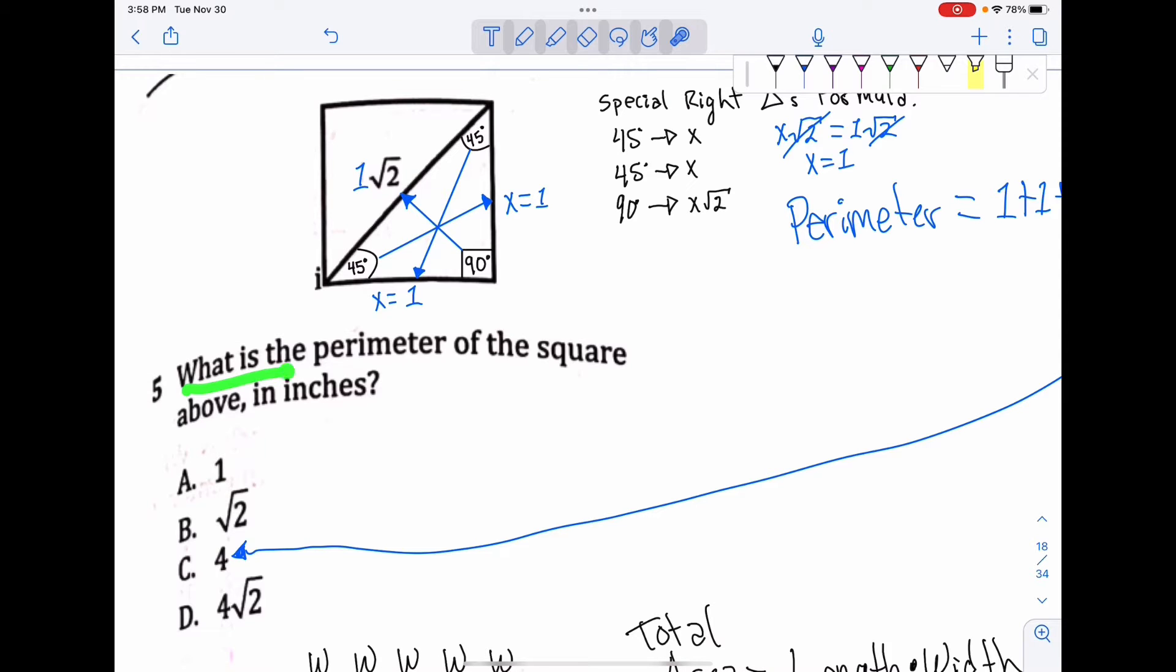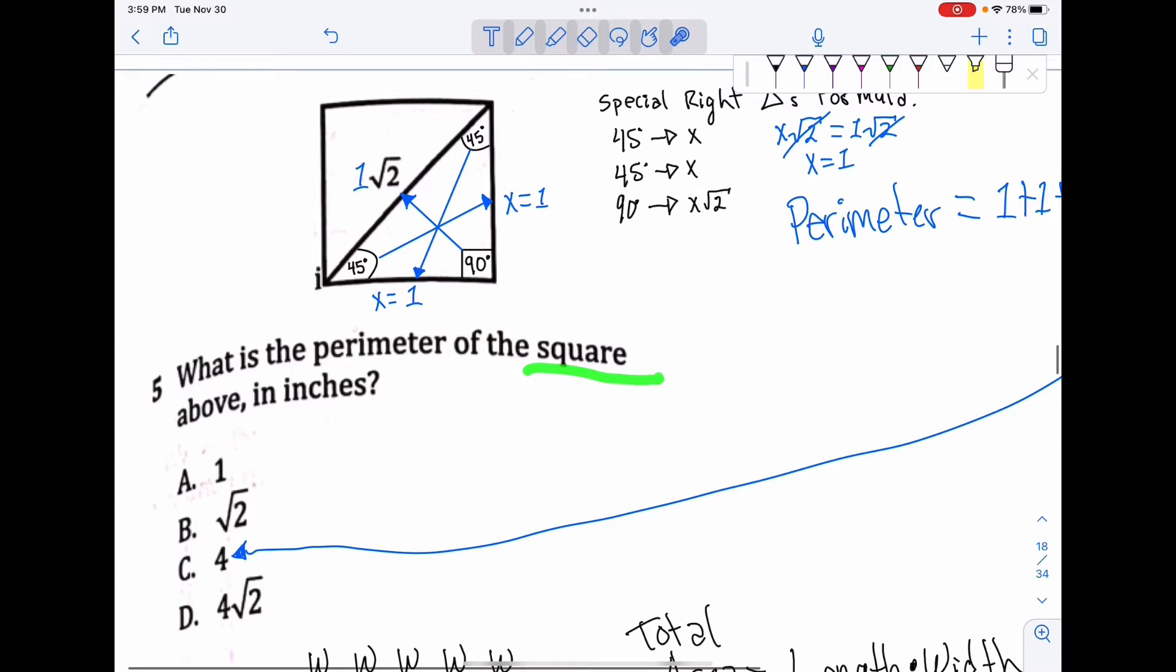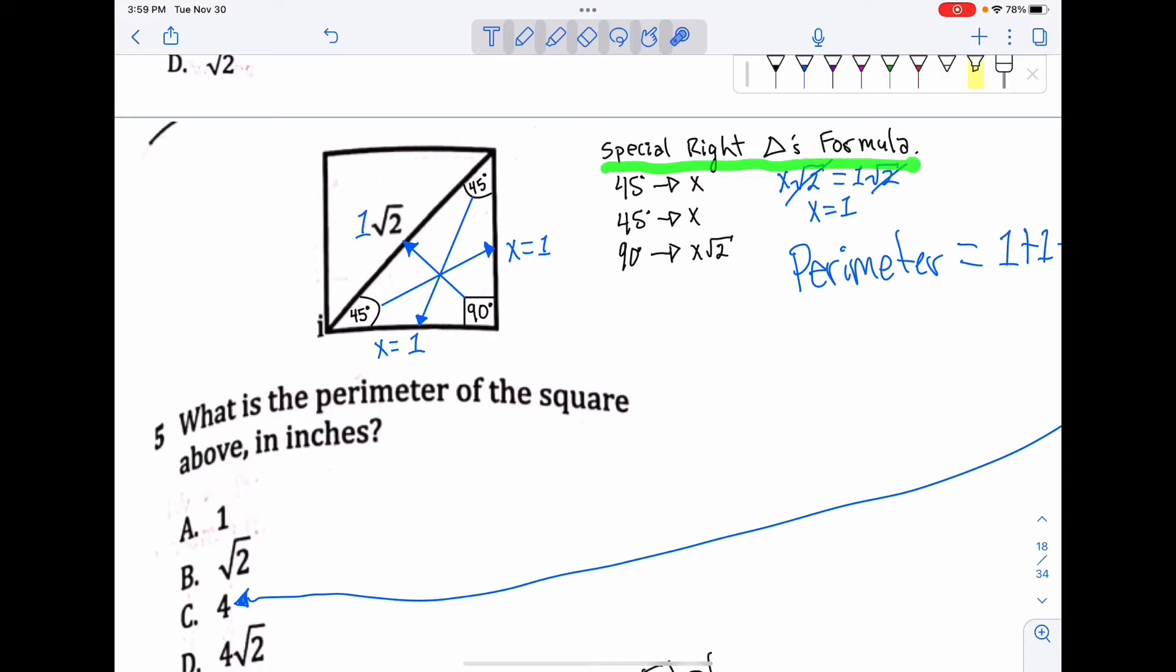So here, what is the perimeter of the square above in inches? We're given just square root of two, but we're also given that it's a square. If you remember your special right triangle formulas, we know that this is a square.